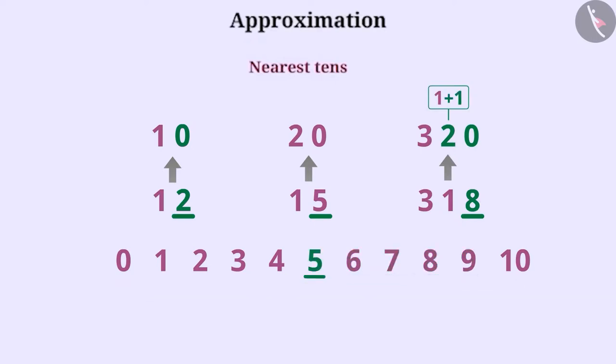Similarly, if the last digit is 5 as in 15, then the given number is estimated to the next 10. This means placing 0 at once and increasing the value of 10's by 1.